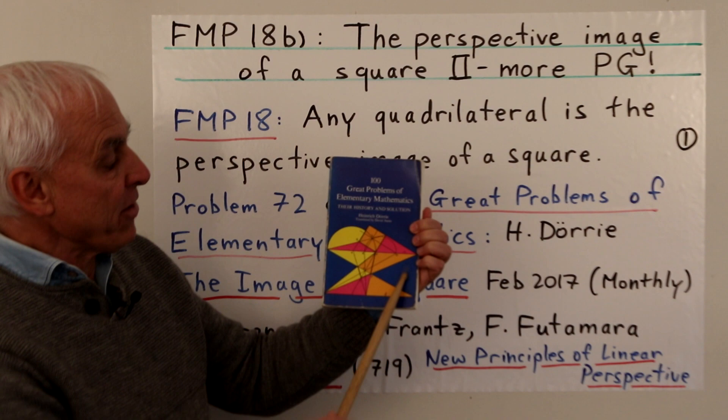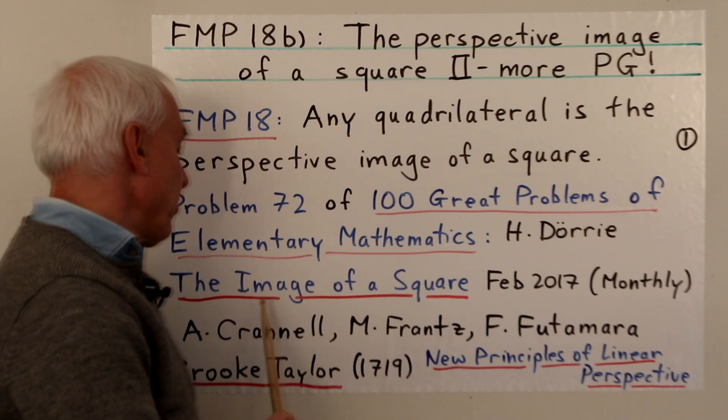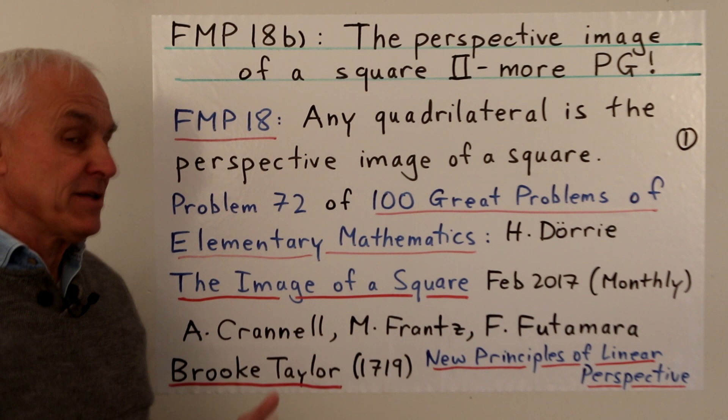You can actually see on the cover that this diagram here is actually taken from this very problem. We, however, are going to be following a slightly different tack. I'm going to be following a very nice paper called The Image of a Square, published in 2017 in the American Mathematical Monthly by Crenel, France, and Futamara.